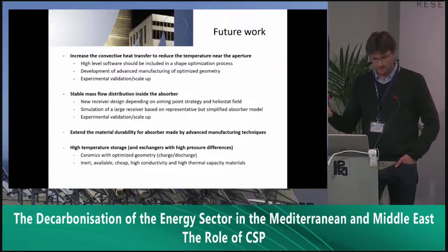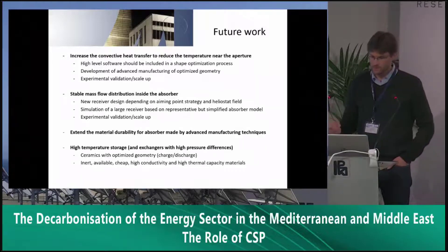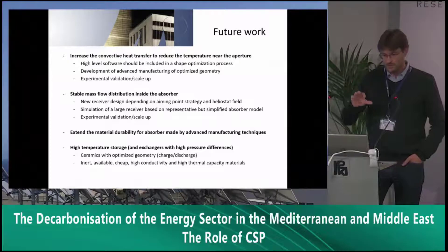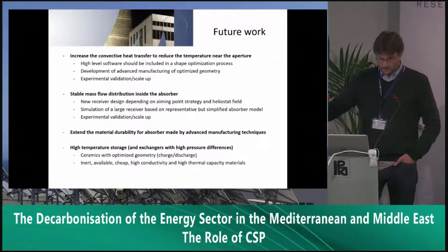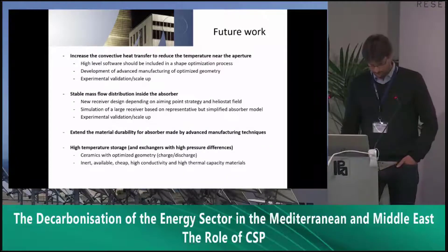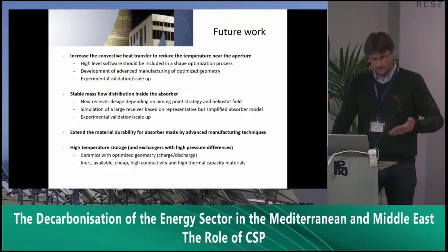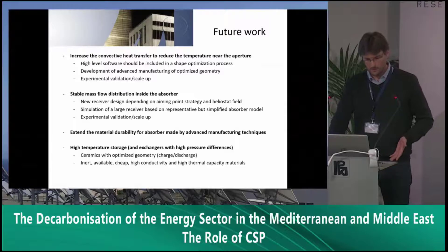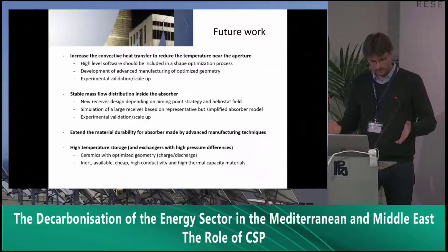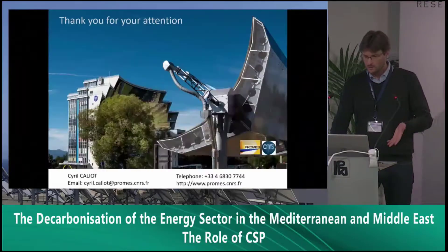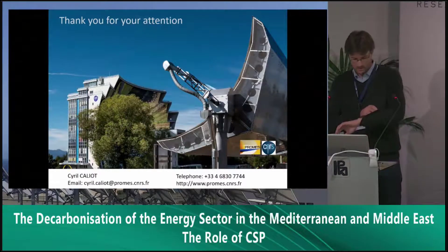For the other challenges — achieving a stable mass flow distribution inside the absorber — we will need a new receiver design, which will depend on the aiming point strategy, meaning the distribution of solar flux on the receiver and the position of heliostats in the field. Simulating this receiver will require new models and experimental validation. Beyond that, there will also be a need to increase material durability, and for high temperature storage, cheap and efficient storage materials and high temperature exchangers will be required. Thank you for your attention.